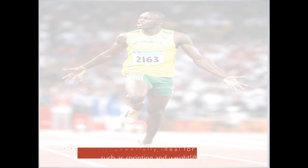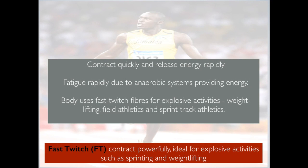Fast twitch fibres contract very powerfully and are ideal for explosive activities such as sprinting and weightlifting. They contract quickly and release energy rapidly, but they also fatigue rapidly due to the anaerobic systems providing energy. Remember from our energy systems that the ATP-PC system is very short in duration — this is the system that largely supplies these fast twitch fibres. The body uses these for explosive activities such as weightlifting, field athletics, and sprint track events.